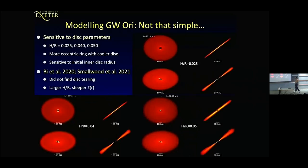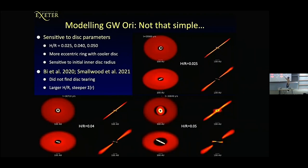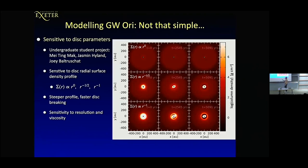The problem is if you change things a little bit, you get different results. Smallwood and others have looked at this as well and don't think the answer is disk tearing — they use different parameters such as larger H/R and a steeper surface density profile. Even for the parameters we use, slightly different H/R values give completely different disk breaking. My undergraduate students May, Jasmine, and Joey also looked at the effect of the surface density profile — a flat disk, sigma proportional to r^{-1/2}, sigma proportional to r^{-1} — and again you get differences in the disk breaking.